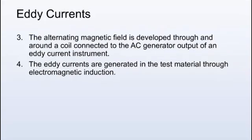The alternating magnetic field is developed through and around a coil connected to the AC generator output of an eddy current instrument.